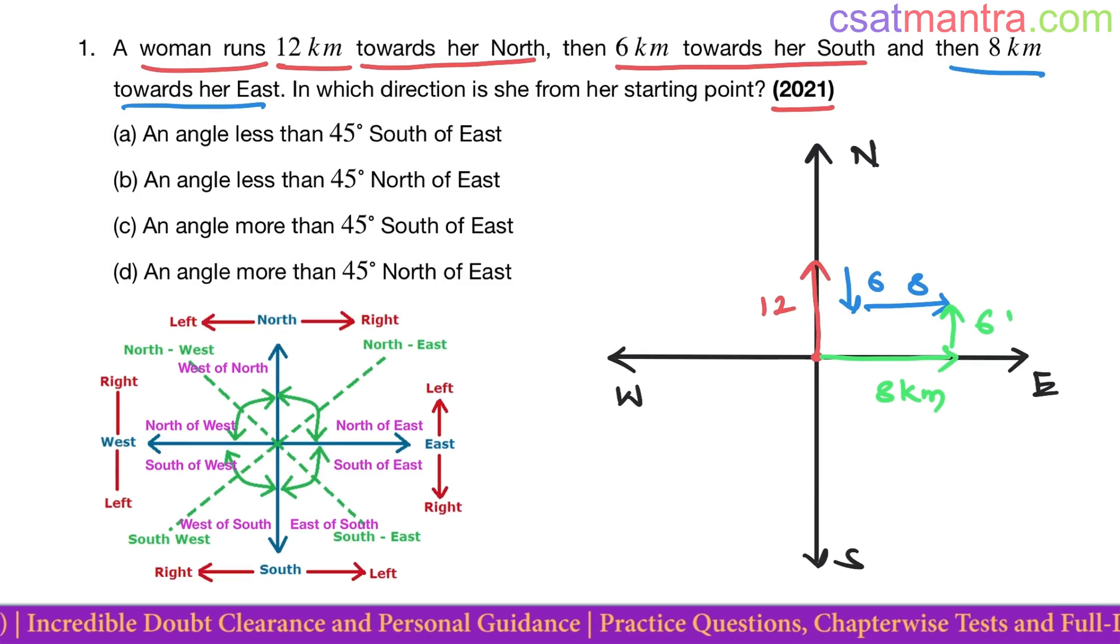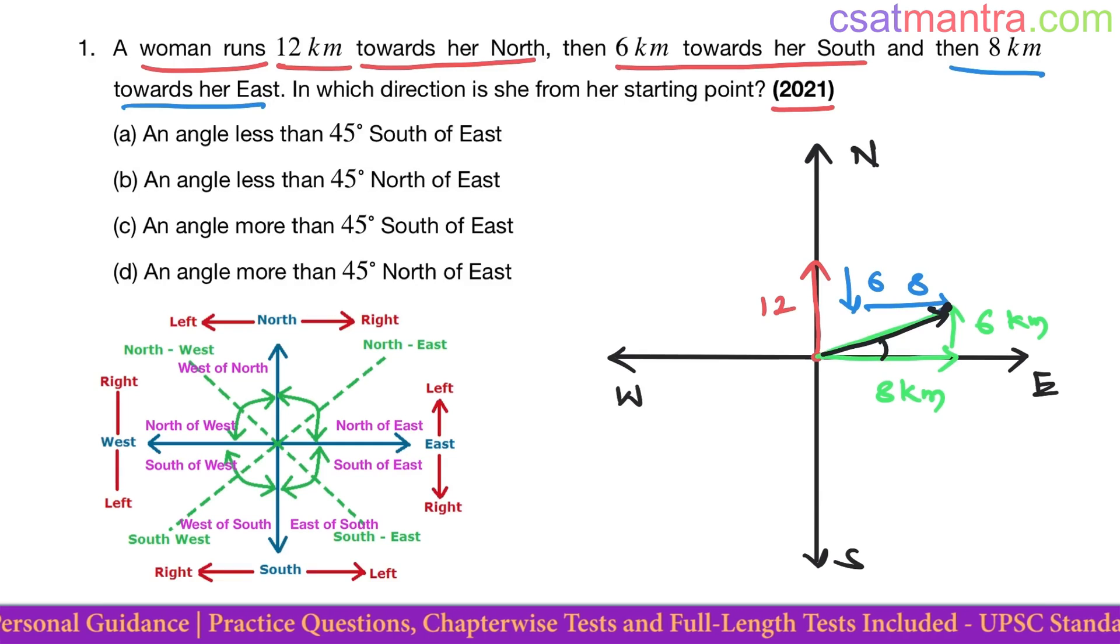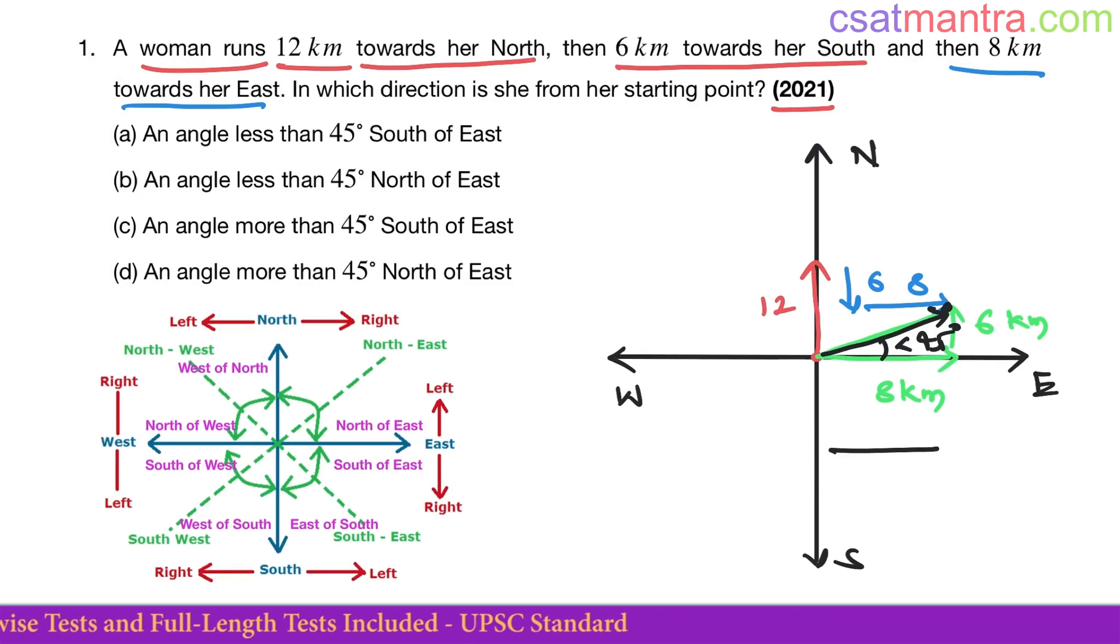This direction is less than 45 degrees. How can you tell this is less than 45 degrees? If this is 8 and the height is also 8, then that is 45 degrees, my friends. See, this total angle in the first quadrant is 90 degrees, right? Half is 45 degrees.